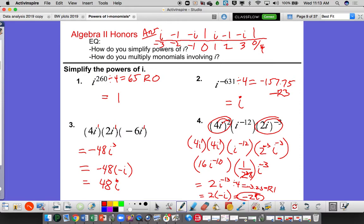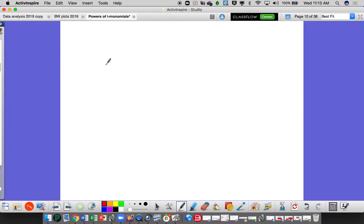So the negative exponent rule, just a quick little blurb here. If I had 5 to the negative 2, that's the same as 1 over 5 squared, which is 1 over 25.